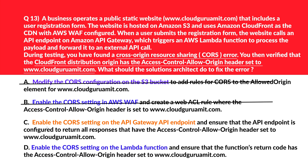Option C: enable the CORS setting on the API Gateway endpoint. Cross-Origin Resource Sharing is enforced by the browser at the application level, and the error occurs when the application makes a request to the API Gateway. Therefore, the API Gateway needs to include correct CORS headers in its response — we'll park this. Option D: enable the CORS setting on the Lambda function. Lambda does not directly handle CORS; it must be handled at the API Gateway level invoking Lambda. Therefore incorrect. We lock option C as the correct answer.